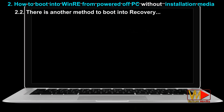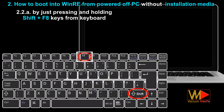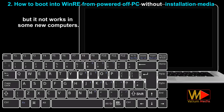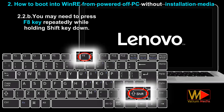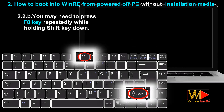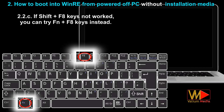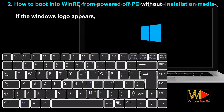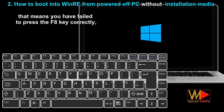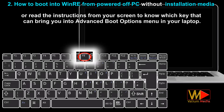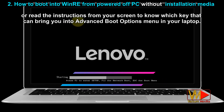There is another method to boot into recovery by pressing and holding Shift plus F8 keys after the manufacturer logo appears, but it does not work on some new computers. You may need to press F8 repeatedly while holding the Shift key. If Shift+F8 doesn't work, try Fn+F8 instead. If the Windows logo appears, you have failed to press F8 correctly and must power off and try again. If both key combinations don't work, press F8 only, or read the on-screen instructions to find the correct key for your laptop's Advanced Boot Options menu.